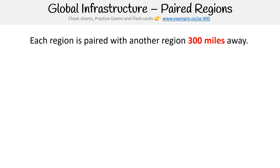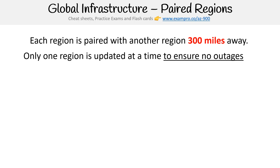So now we're looking at paired regions. Each region is paired with another region 300 miles away. The reason why Azure does this is so that if one region is being updated, the other one is still available. If you're planning to make sure that you never have downtime, you can put your resources in that paired region and you're going to have higher availability.